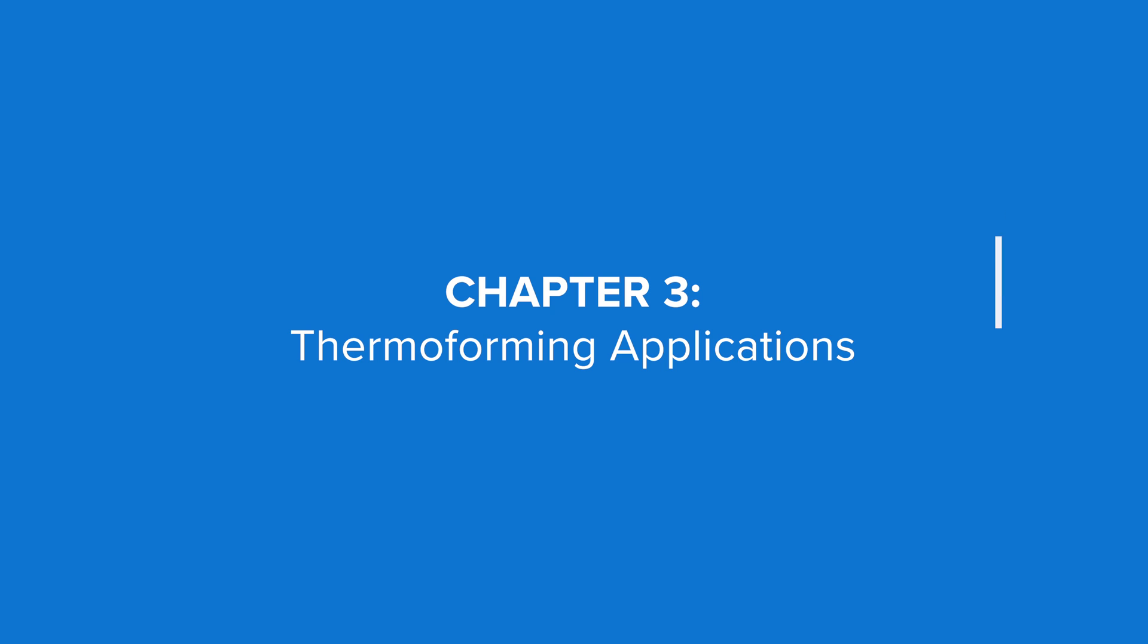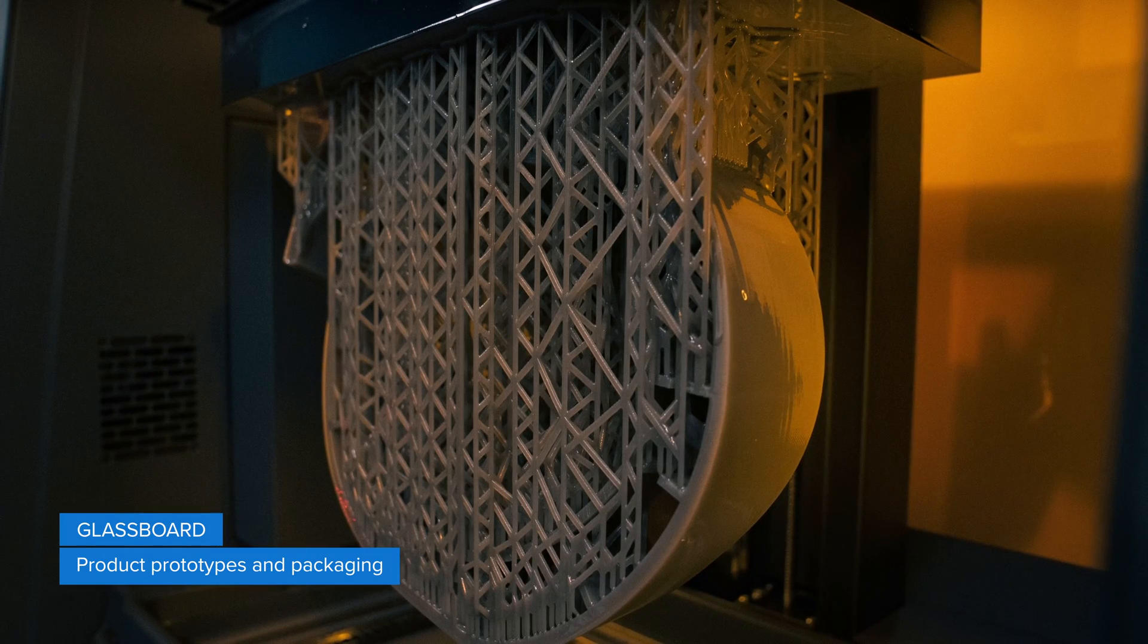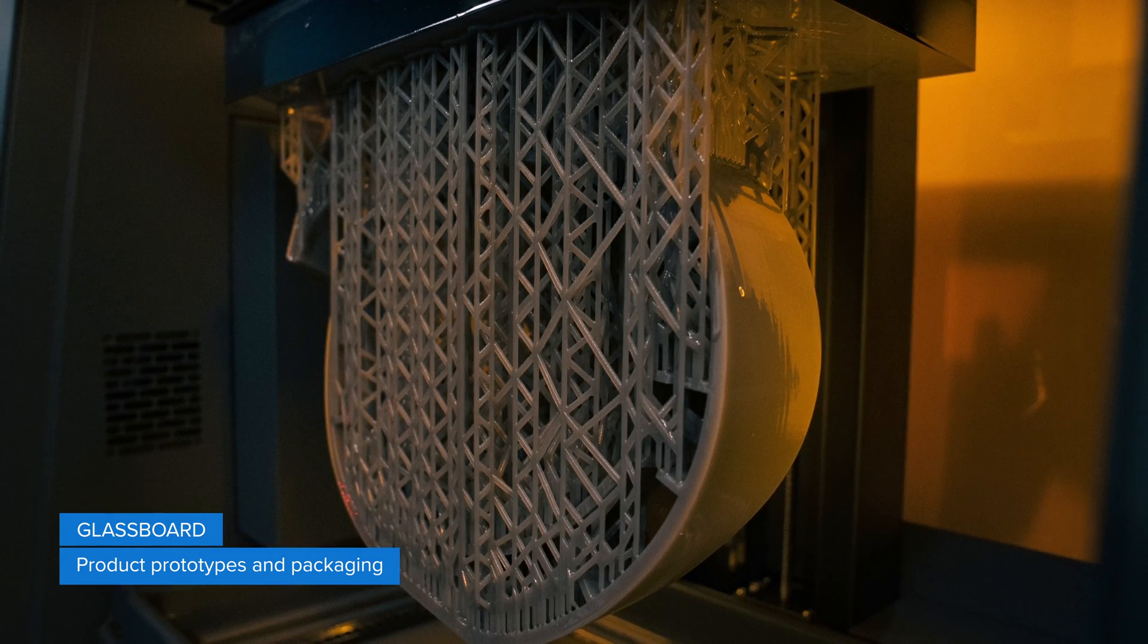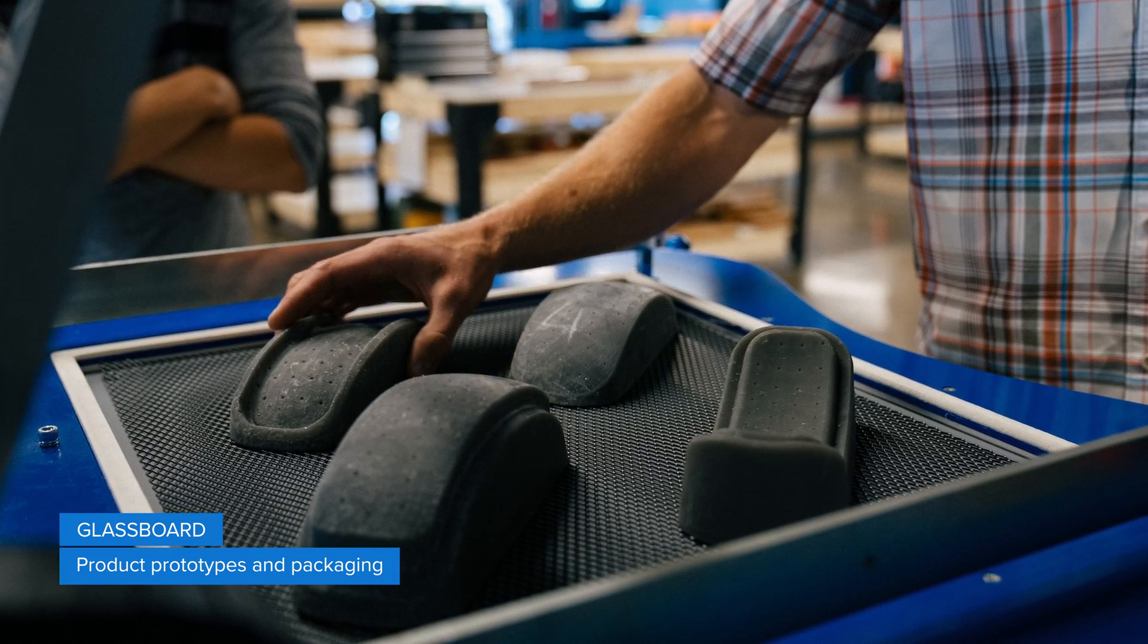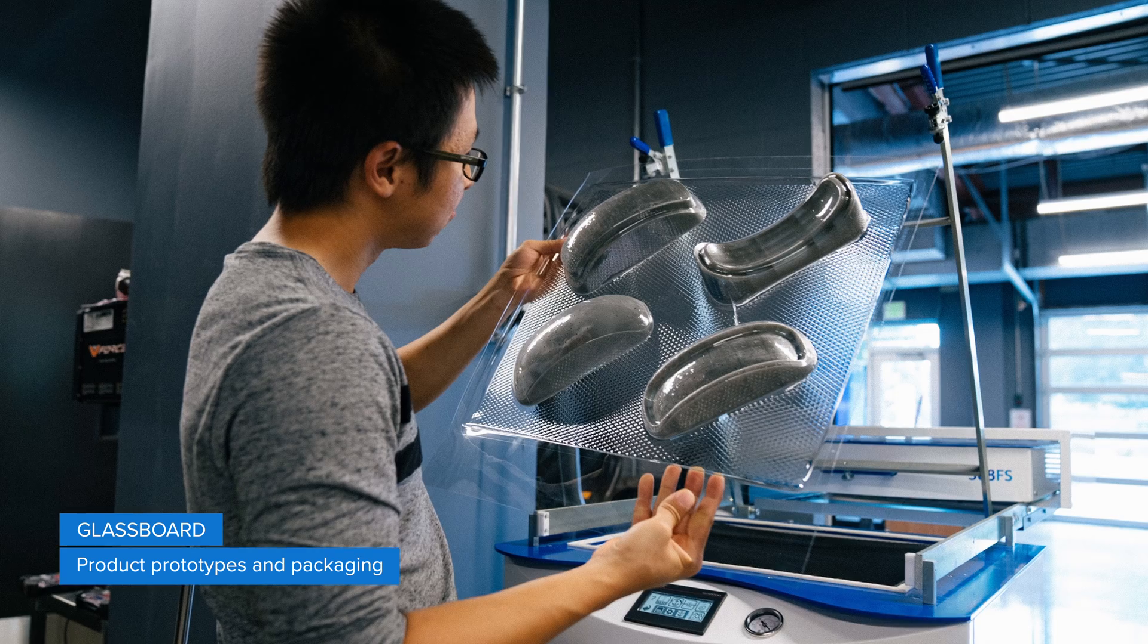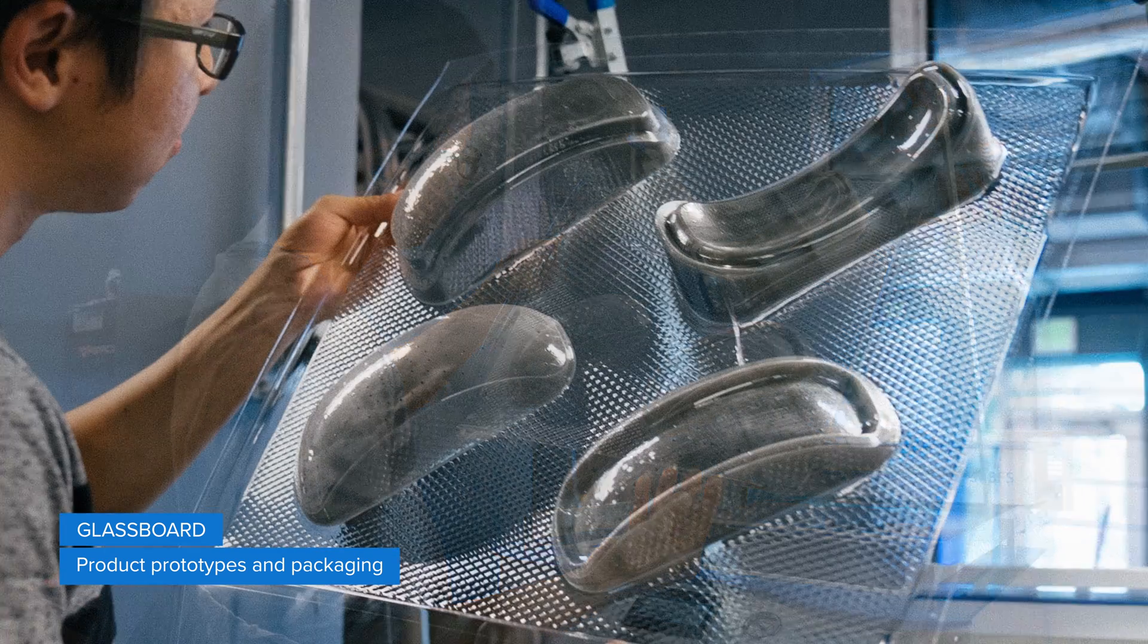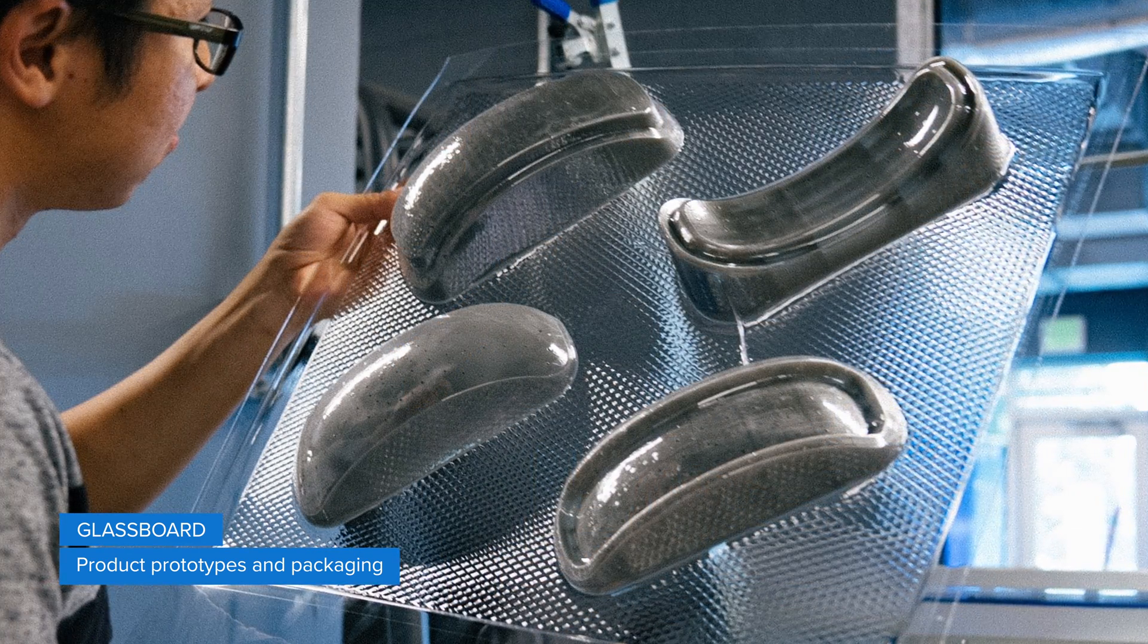Let's see some examples of how innovative companies have been using molds and patterns produced with Formlabs 3D printers for thermoforming. Product development firm Glassboard leverages the printing speed of draft resin to quickly produce molds and thermoform polycarbonate prototypes such as helmet shells or packaging. They can achieve complicated mold shapes that would be difficult to manufacture traditionally.